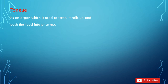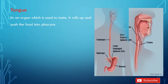The tongue is also present in our oral cavity. It is a muscular organ used to taste food. The basic function of the tongue is to taste. It rolls up and pushes the food into the pharynx. Behind the oral cavity, that narrow part is called the pharynx.